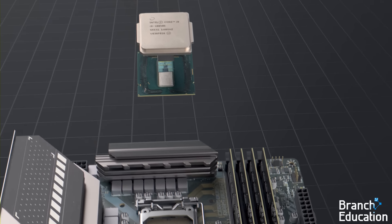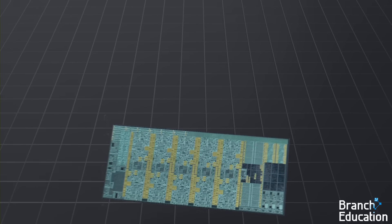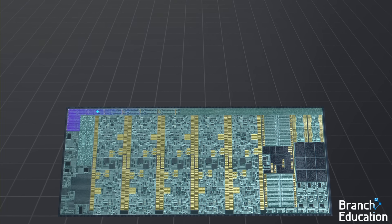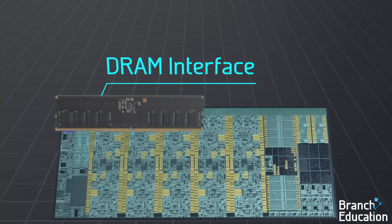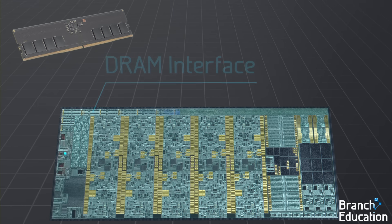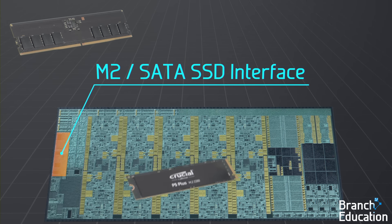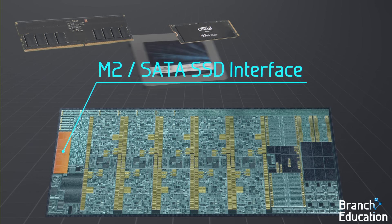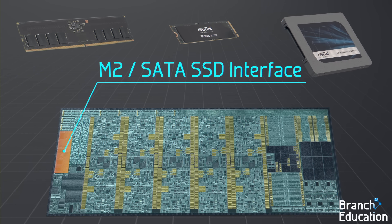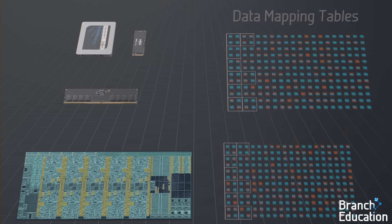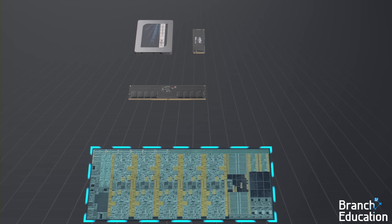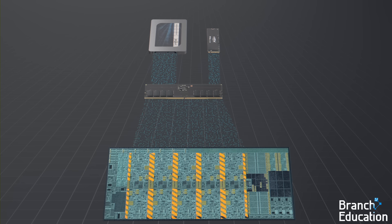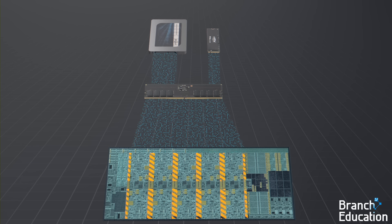Let's move to look inside the CPU at the processor. Along with numerous cores and many other elements, we find the memory controller which manages and communicates with the DRAM. There's also a separate section for communicating with SSDs plugged into the M.2 slots, and with SSDs and hard drives plugged into SATA connectors. Using these sections, along with data mapping tables, the CPU manages the flow of data from the SSD to DRAM, as well as from DRAM to cache memory for processing by the cores.